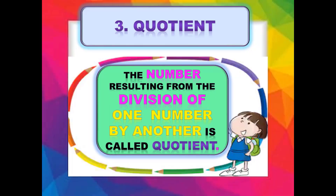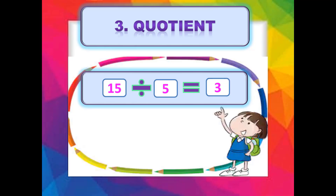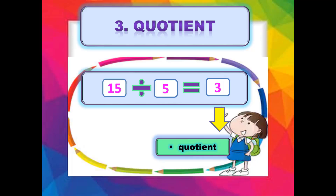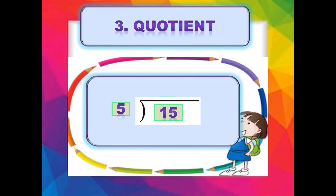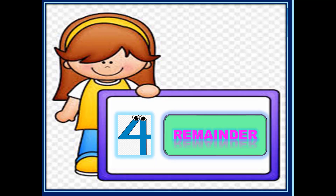What is quotient? The number resulting from the division of one number by another is called quotient۔ وہ number جو division کے result میں آتا ہے اسے quotient کہتے ہیں۔ Example میں جب ہم نے 15 divided by 5 کیا تو answer 3 آیا — تو 3 ہمارا quotient ہے۔ Long division میں: 5 کتنے times 15 ہوتا ہے؟ 3 times۔ ہم 15 لکھیں گے، 15 minus 15 = 0۔ تو resulting number 3 will be our quotient۔